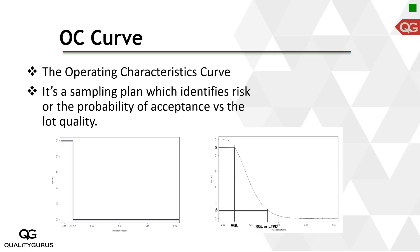Let's understand the OC curve. Initially we said there is an ideal OC curve — this is the ideal one. It basically segregates good lots and bad lots very efficiently. Any lot with less than 1.5% defective gets accepted; any lot with more than 1.5% defective gets rejected. The probability is one if the percent defective is 1.5% or less, and zero if it's more than 1.5%.